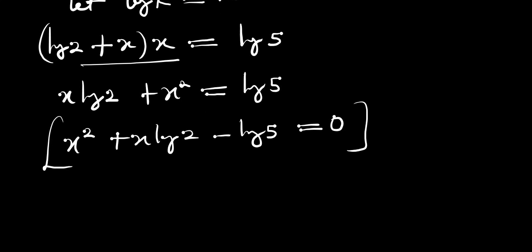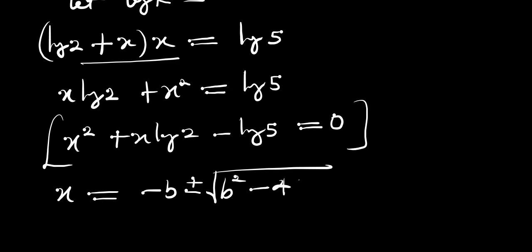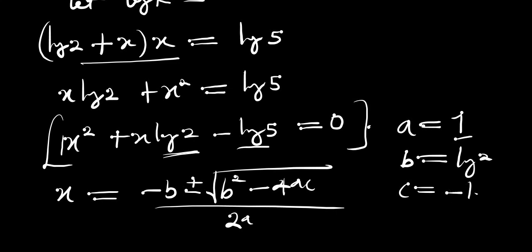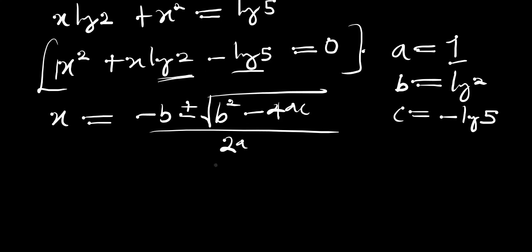As usual, we have x equals negative b plus or minus square root of b squared minus 4ac, divided by 2a. From this quadratic equation, a equals 1 (the coefficient of x squared), b equals log of 2 (the coefficient of x), and c equals negative log of 5.